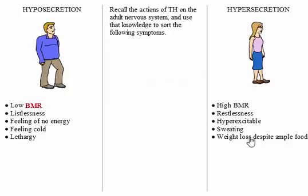Recall the actions of TH on the adult nervous system and use that knowledge to sort the following symptoms.